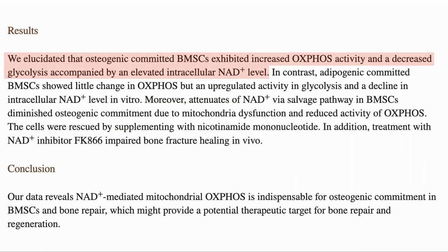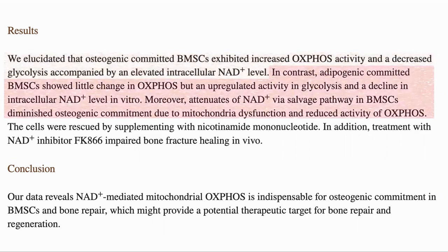What they found was that stem cells which became bone cells exhibited increased Oxphos activity and decreased glycolysis, along with an increased NAD level. In contrast, stem cells which became fat cells showed little change in Oxphos activity, but an increase in glycolysis, and reducing NAD led to less bone cell formation.